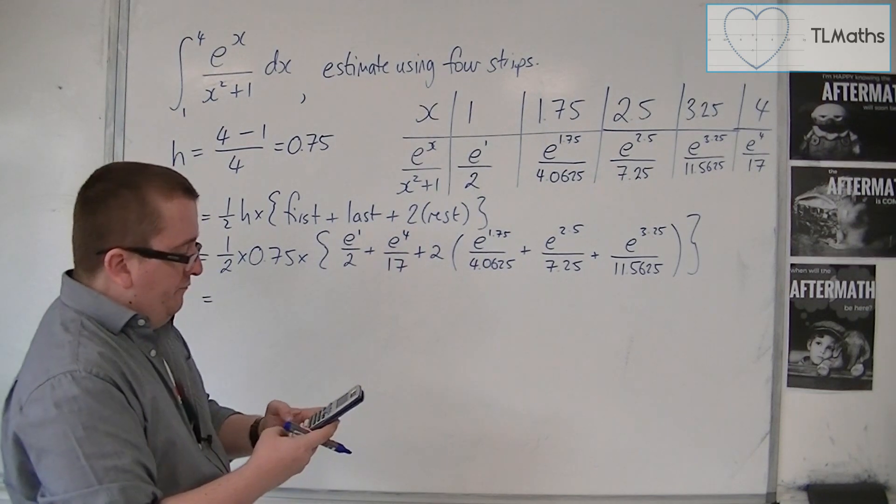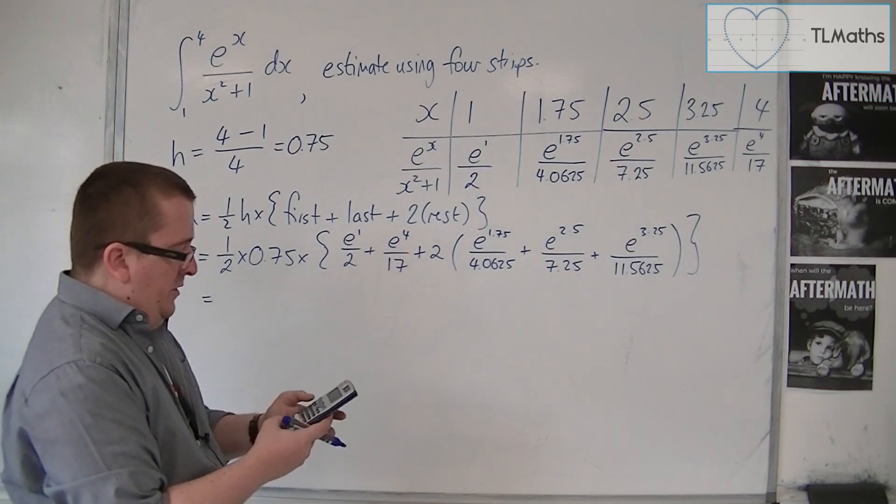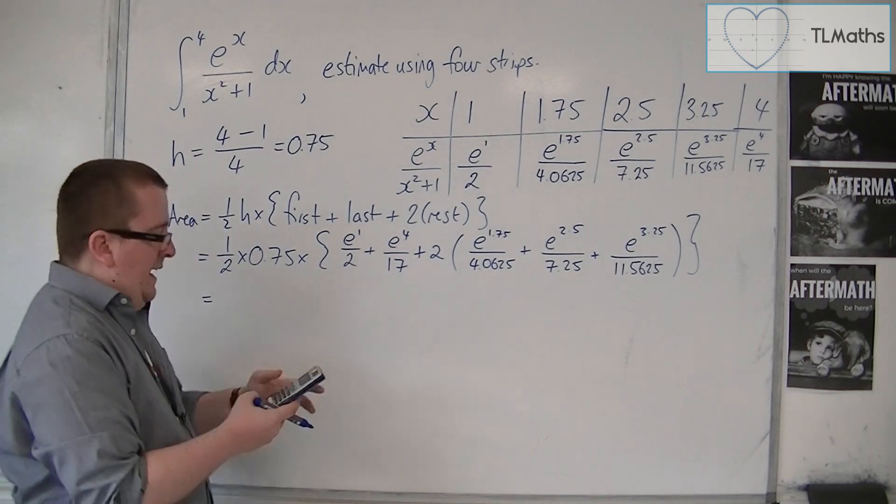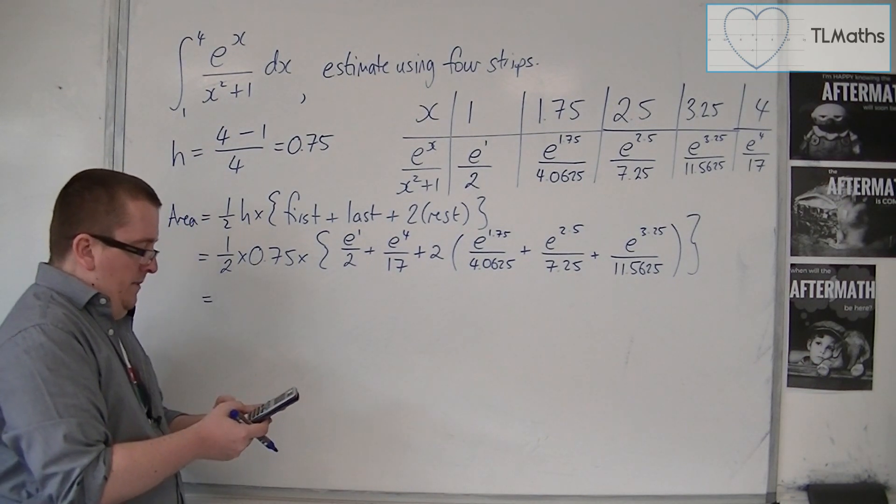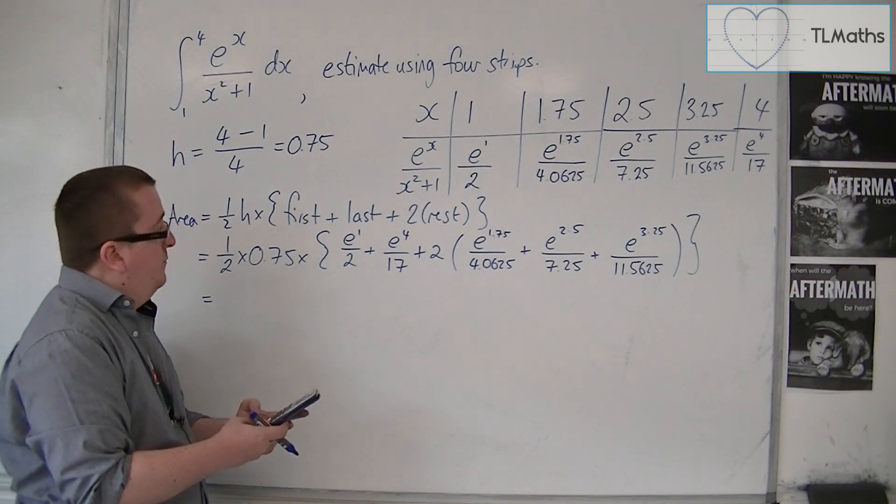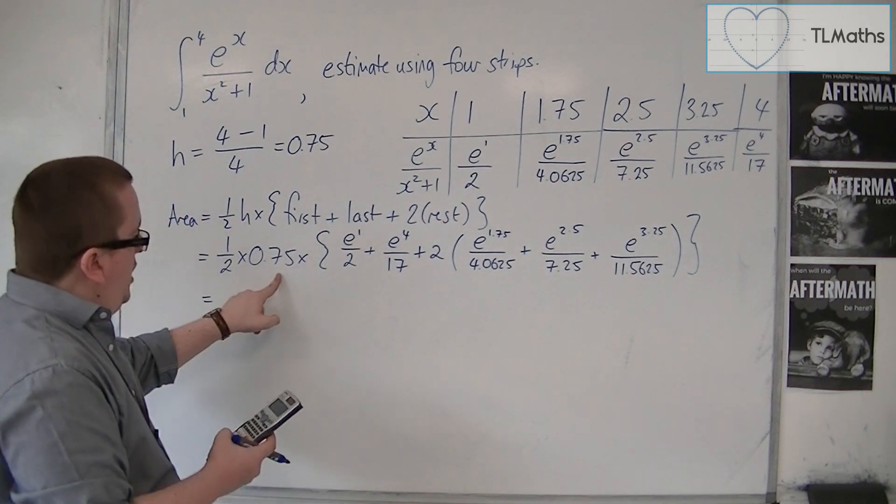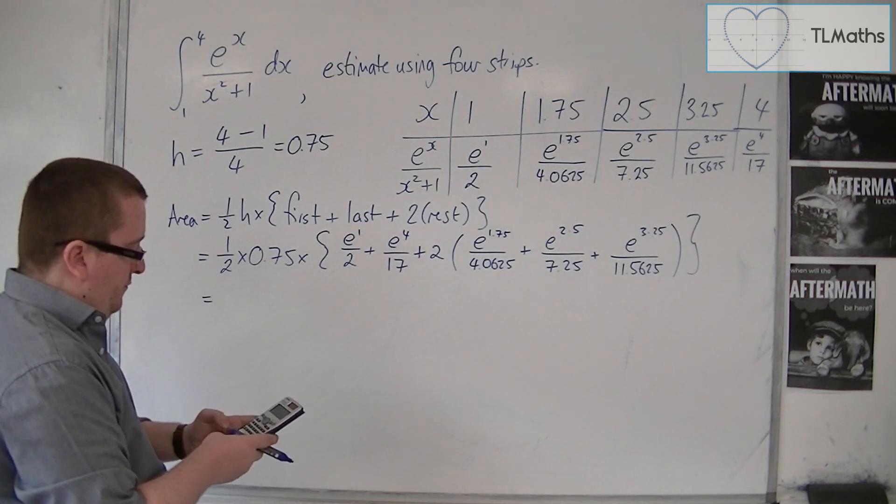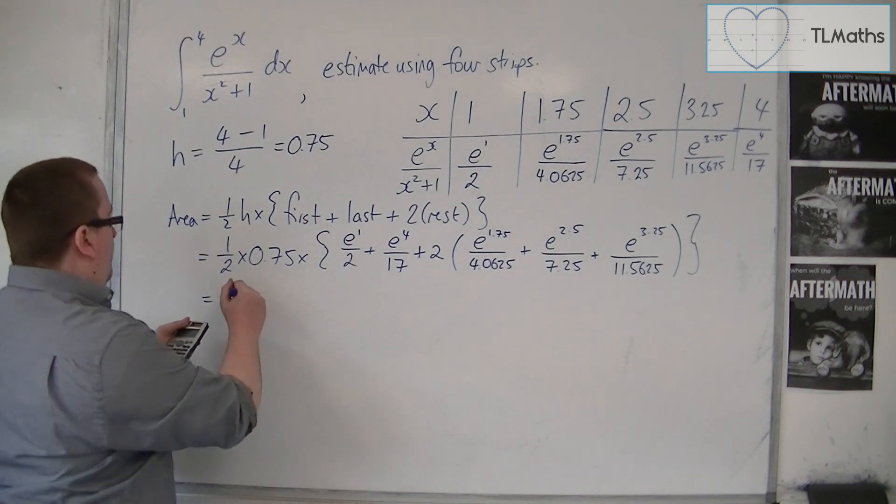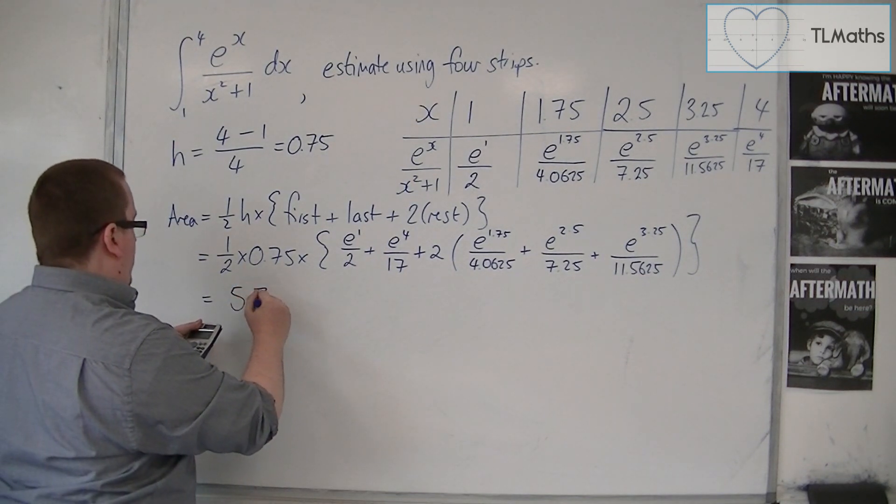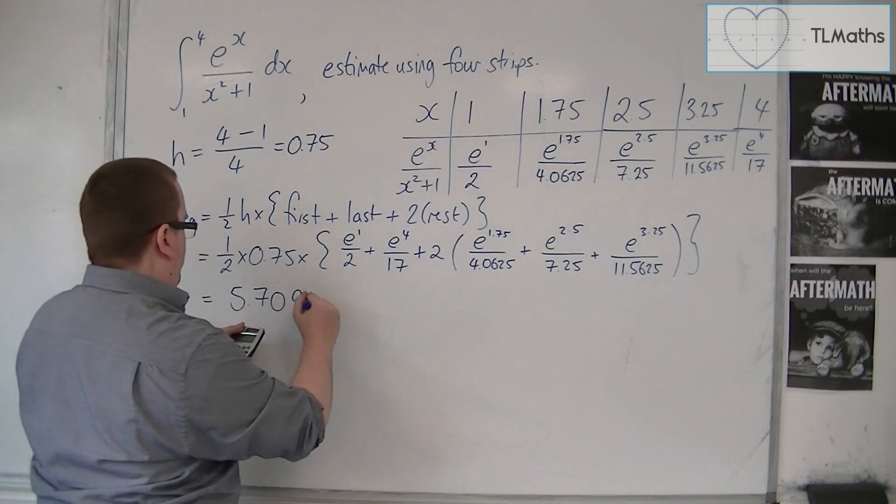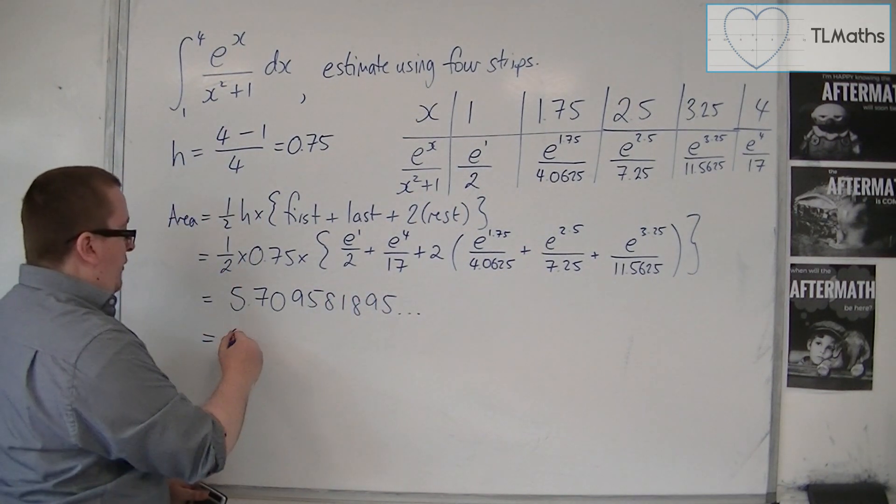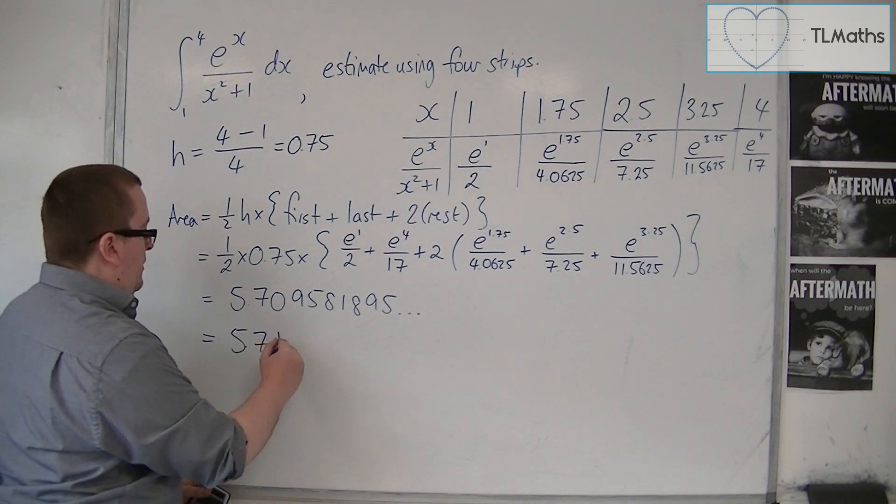I'm going to double it. Then I'm going to add on e to the 4 divided by 17. Then I'm going to add on e to the 1 divided by 2. And then I'm going to times it by 0.75, and then times it by 1.5. And that gets me 5.709581895, which to three significant figures is 5.71.